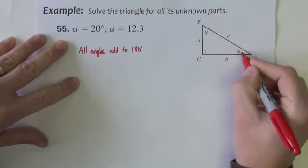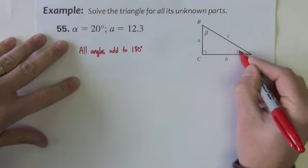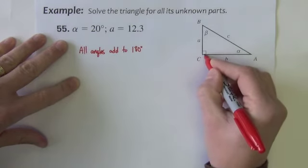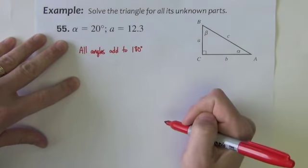Therefore if I know alpha angle A alpha and I know angle C I should be able to take them away from 180 and get angle beta.